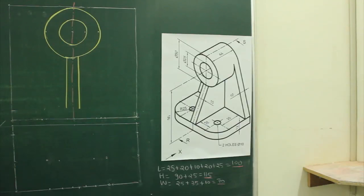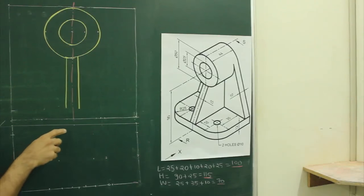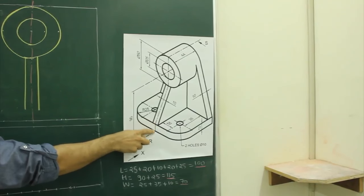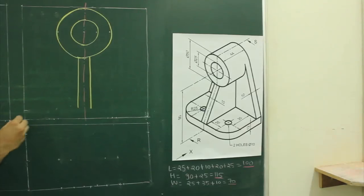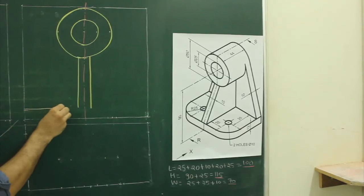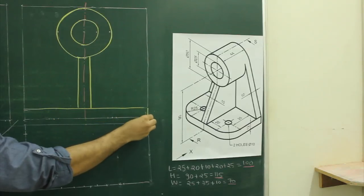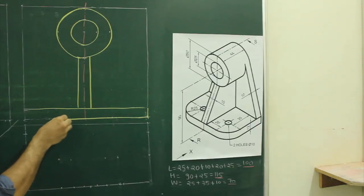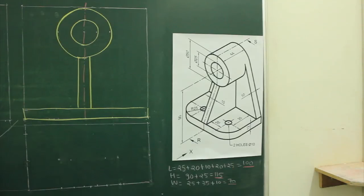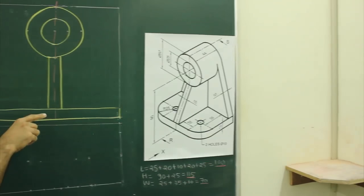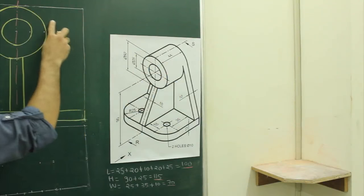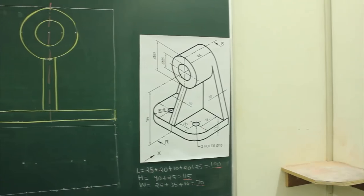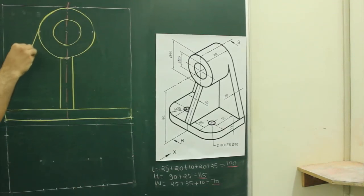Now, again if you see the main diagram, there are two tangents — this part is going as a tangent on both sides. So we need to draw that over here. We will draw tangents on both sides.